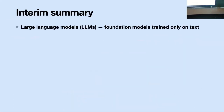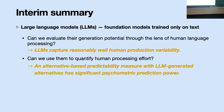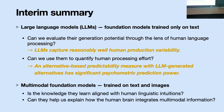Interim summary: we've looked at LLMs — foundation models trained only on text. We asked whether it makes sense to evaluate them through the lens of human language processing. We saw that they can reasonably well reproduce the variability in human production. We also saw that it is possible to define a method to quantify effort, and that this method, which exploits LLM generations, significantly predicts psychometric measures of human effort. Now, in the last 10-15 minutes, I'd like to tell you about some work with foundation models that don't look only at text, but also have access to visual information.